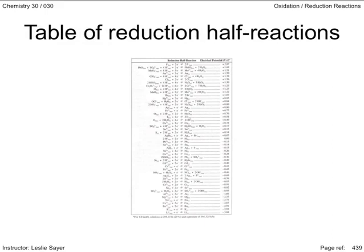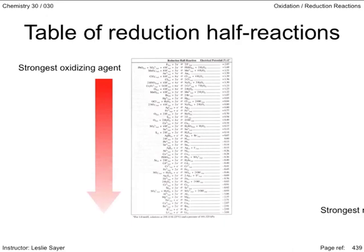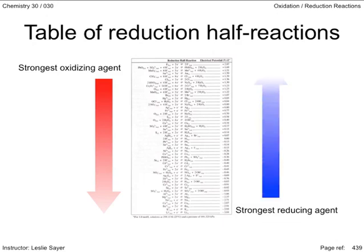Your data book has a page of reduction half-reactions arranged in exactly the same manner. The oxidizing agents on the left of the page and the reducing agents on the right. The strongest oxidizing agents are on the top left and gradually losing the ability to gain electrons as you go down the page. The strongest reducing agents are at the bottom right and having an increasingly harder time losing electrons as you go up the page.